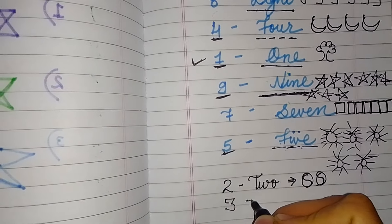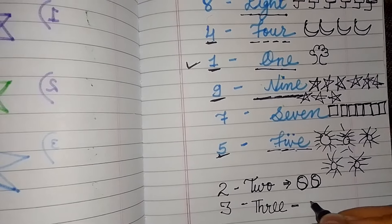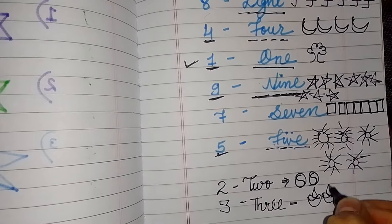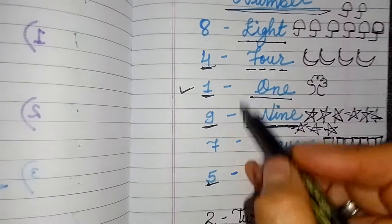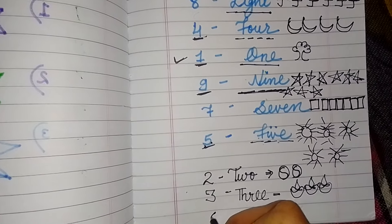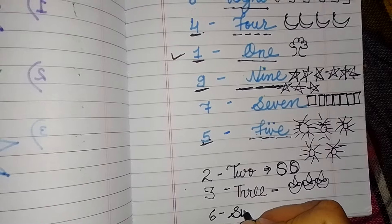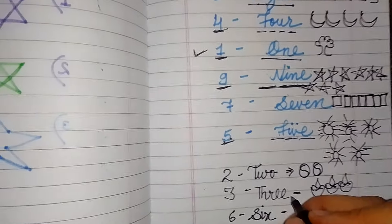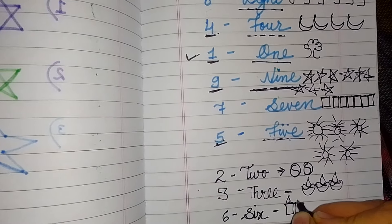T-H-R-E-E — three. Three lamps: one, two, and three. Number four is here, number five is here. Number six is missing! What is the spelling of six? S-I-X — six. So we'll be making six candles: one, two, three, four, five, six.